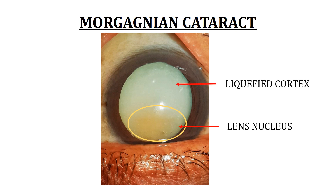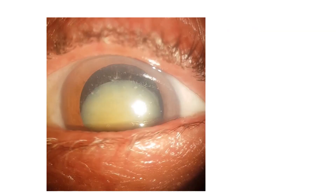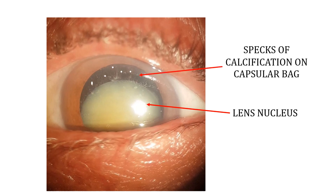Now, what happens if the patient does not come for cataract surgery even at this stage? In some cases, with time, the liquefied cortex gets absorbed and only the lens capsule and the lens nucleus are left behind. As you can see in this image, only the lens nucleus is visible, along with tiny specks of calcification on the capsular bag and no cortex. This is a Morgagnian cataract with absorbed cortical matter.